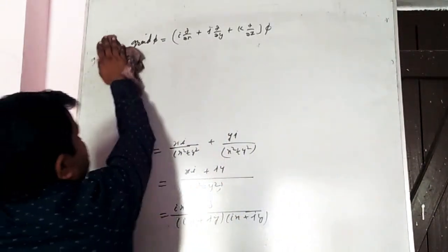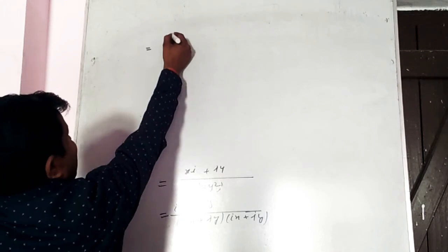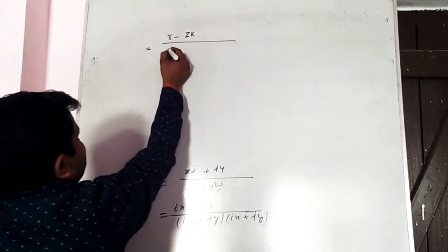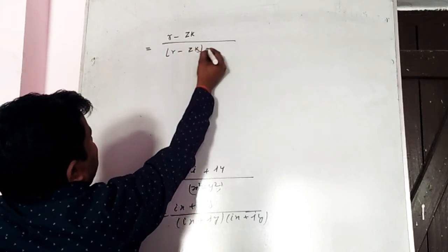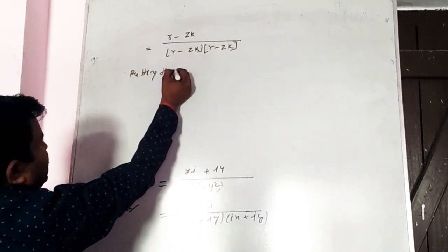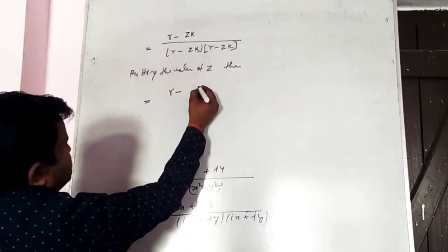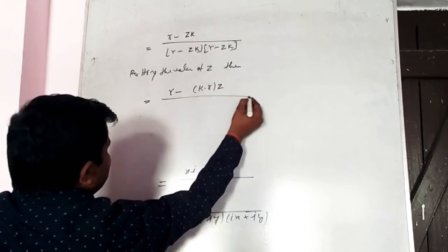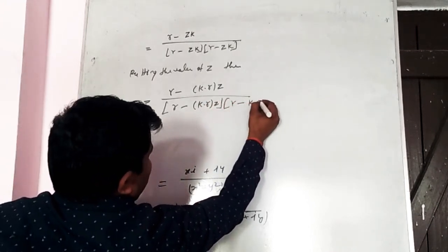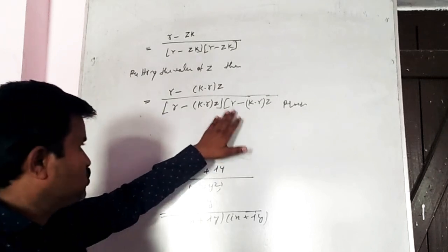Putting back the condition: ix + jy = r⃗ − kz = r⃗ − (k·r⃗)k, and x²+y² = |r⃗ − (k·r⃗)k|². So grad φ = (r⃗ − (k·r⃗)k) / |r⃗ − (k·r⃗)k|². Proved.